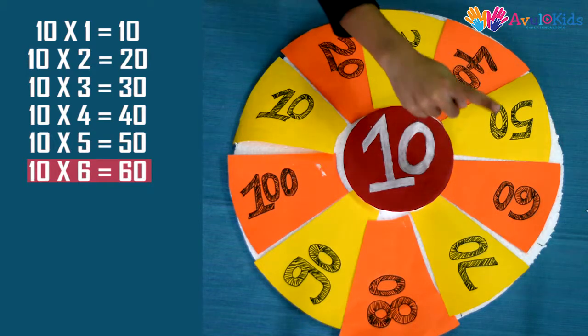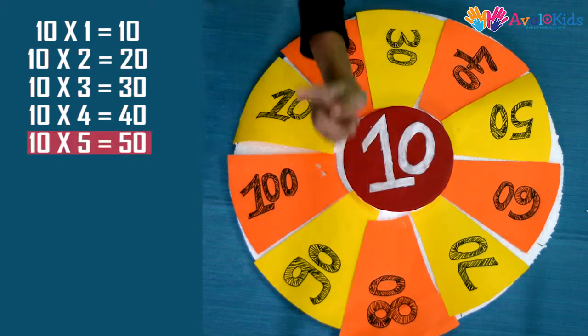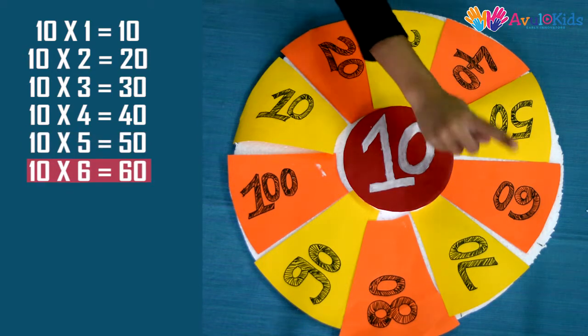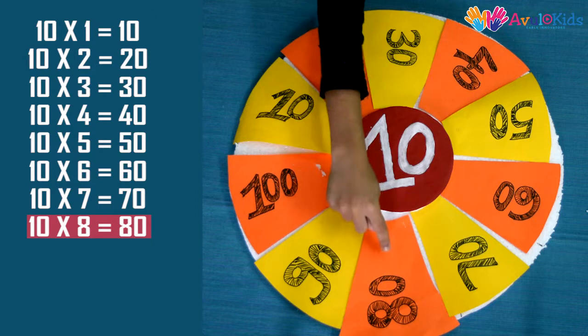10 sixes are 60, 10 sevens are 70, and 10 eights are 80. 10 fives are 50, 10 sixes are 60, 10 sevens are 70, and 10 eights are 80.